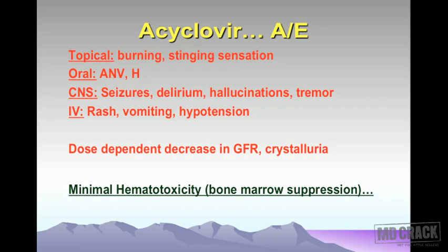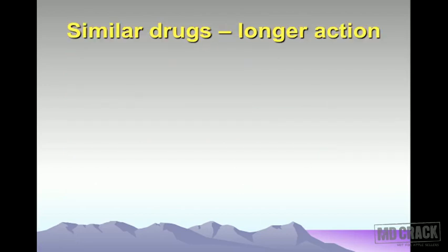The speciality of acyclovir is that it is comparatively safer and less toxic than zidovudine, particularly regarding bone marrow suppression. Many antiviral drugs can be toxic to rapidly multiplying host cells, especially bone marrow. Zidovudine is very important in producing bone marrow suppression, whereas acyclovir produces minimal hematotoxicity. When we say acyclovir is less toxic, we are targeting this issue of bone marrow suppression.